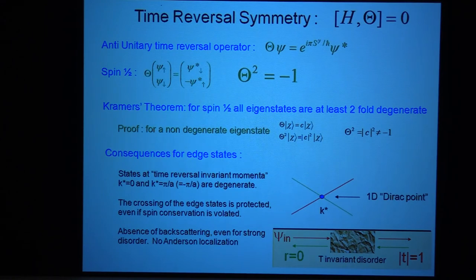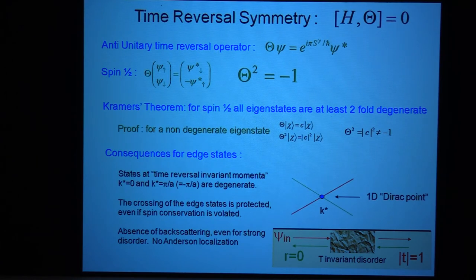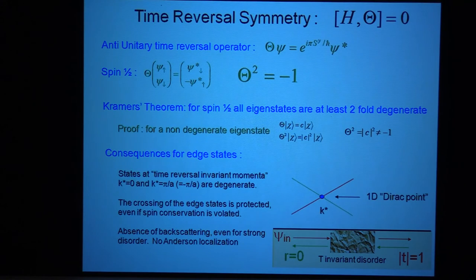The spins are sort of like tops — they change sign under time reversal. And there's a very important property: this minus sign means that if you do time reversal twice, it squares to minus one. This minus one is the same minus sign that you get if you take a spin one-half and you rotate it by 360 degrees. This minus sign has a very important consequence — when I first learned it I thought it was completely trivial, but now I realize it's not as trivial as I thought.